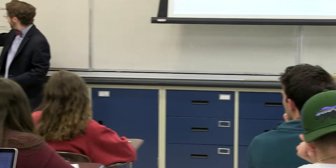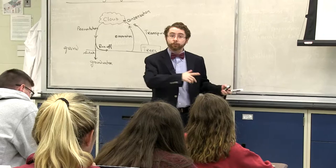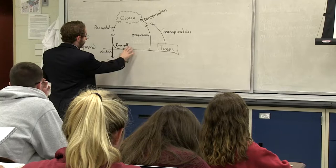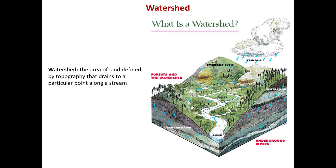Now we're going to take a look more carefully at the idea of runoff and groundwater. Both groundwater and runoff can be considered part of a watershed. A watershed is the area of land defined by topography where all water, when it lands in that area, is going to accumulate in one particular location — typically a stream or river, and then eventually making its way back out to the ocean.